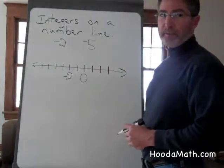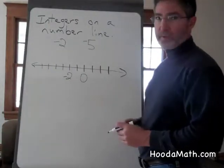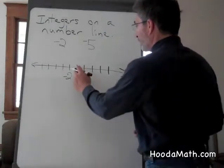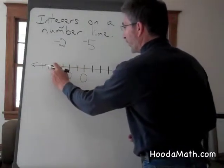Negative five is also less than zero, so it is left of zero, five units. One, two, three, four, five.